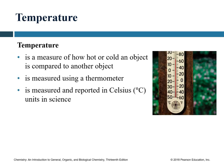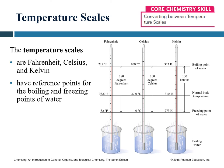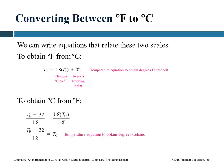Temperature is a measure of how hot or cold an object is compared to another. It is usually measured using a thermometer and reported in degrees Celsius in science. Other units include Fahrenheit, commonly used in the US, and Kelvin, which is commonly used in chemistry. We can use conversion factors to go from one temperature unit to another.